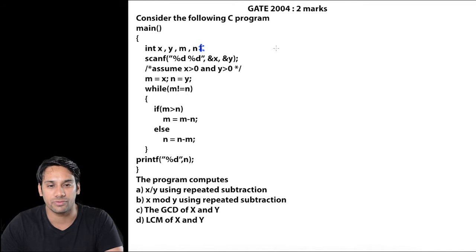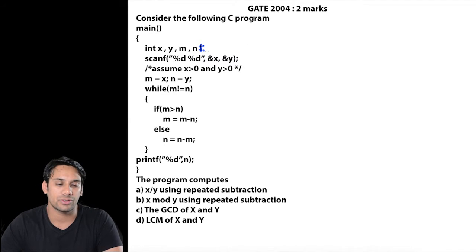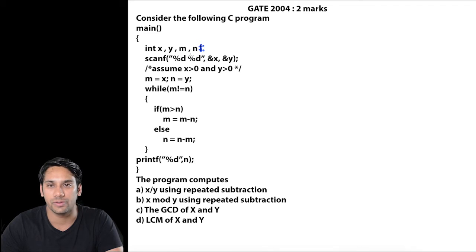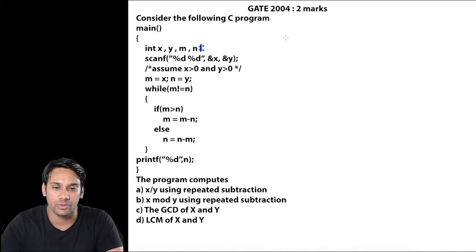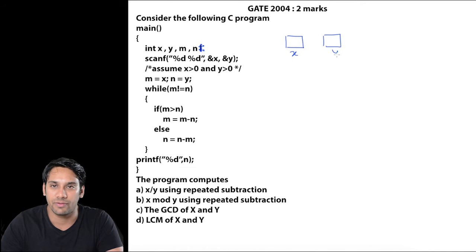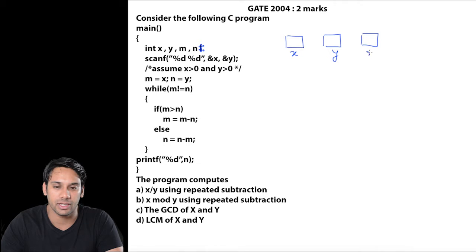This question was asked in the year 2004 and in this question they are taking 4 variables: x, y, m and n. So let us suppose this is the variable x, this is the variable y, this is the variable m and this is the variable n.